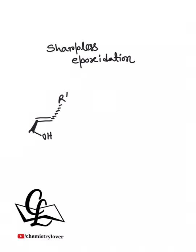And you have to place the allylic alcohol like this, so you have to place the OH group at your left near corner, so this side. Now two reagents are used for this: one is plus diethyl tartrate and along with that titanium isopropoxide.